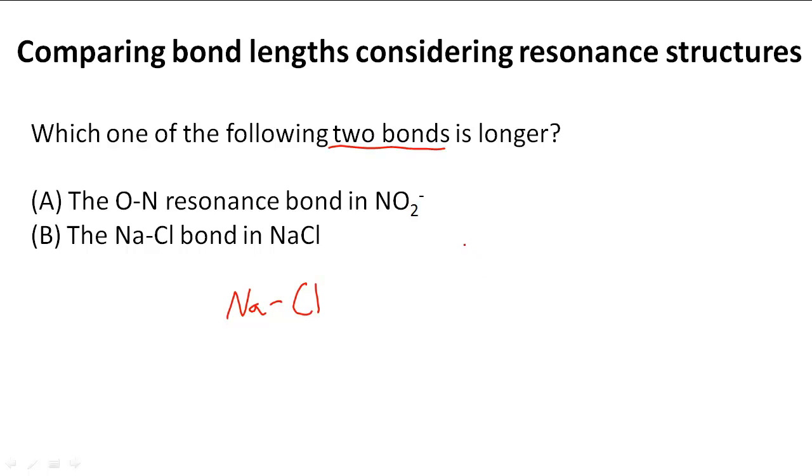So what we know about double bonds here, we're talking about the resonance bond, the bond that can switch from a double bond to single bond. So we're talking about double bonds here, and we know this one is talking about just a single bond.